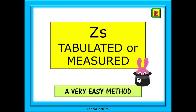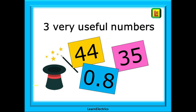Welcome to this video from LearnElectrics. Some time ago I made a video entitled '35 is the magic number' and a few people have since asked if there are any other useful numbers that should be remembered and any other little number tricks that can be used. When it comes to maximum ZS values, there are three very useful numbers: 44, 35, and 0.8. I sometimes call 44 and 35 the magic numbers as they allow you to quickly calculate ZS values for common breakers without the need for looking things up in a book.